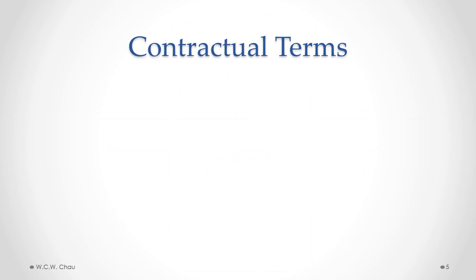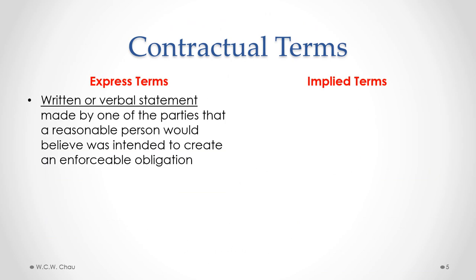There are two types of contractual terms: express terms and implied terms. Express terms are the ones that we know best — they're the ones that are either written on paper or stated verbally out loud by one of the parties. Both are considered to be terms when a reasonable person would believe that the statement was intended to create an enforceable obligation. In other words, they are terms — they're not representations and they're not puffs.